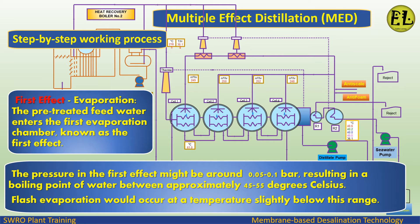First Effect — Evaporation: The pre-treated feed water enters the first evaporation chamber, known as the first effect. The pressure in the first effect might be around 0.05 to 0.1 bar, resulting in a boiling point of water between approximately 45 to 55 degrees Celsius. Flash evaporation occurs at a temperature slightly below this range.